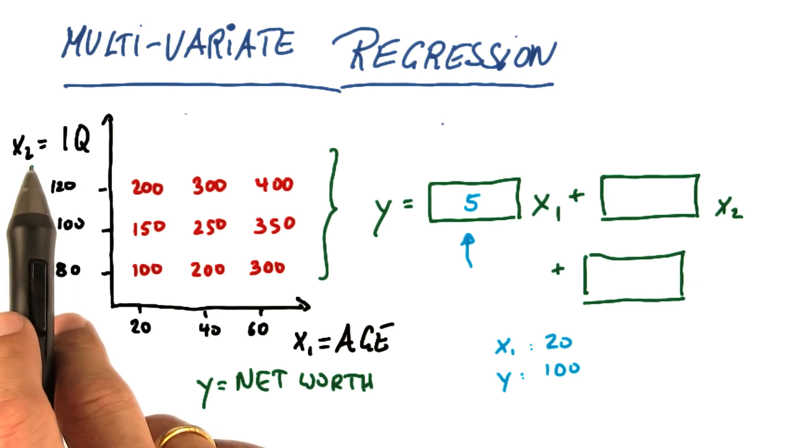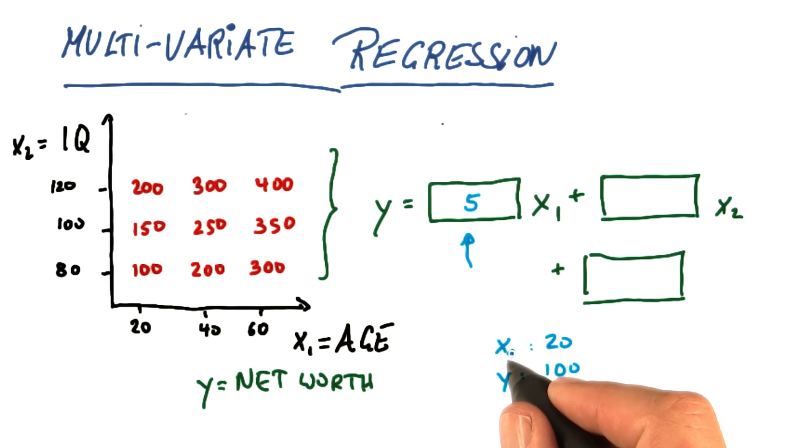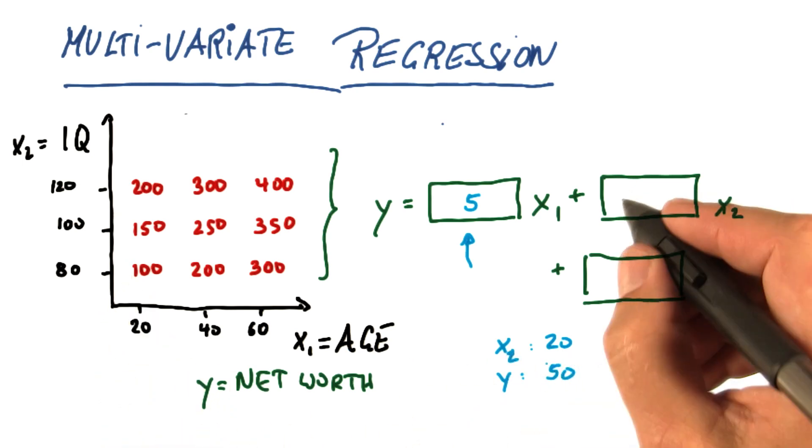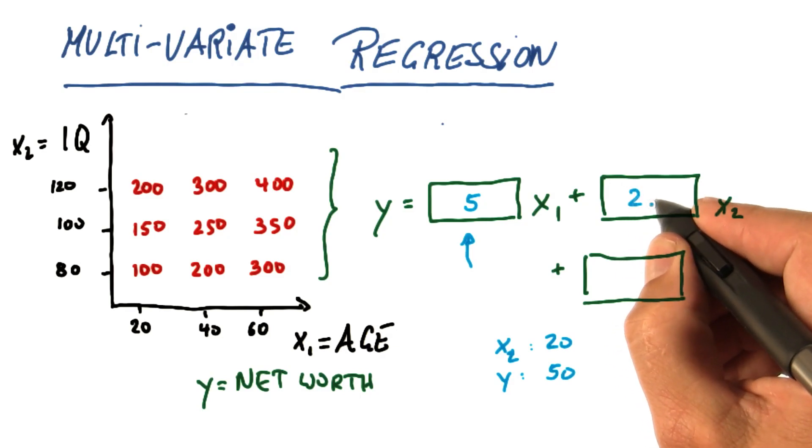As we do the same thing for the x2 variable, we find when x2 grows by 20, y only grows by 50. So we divide 50 by 20 and get 2.5.